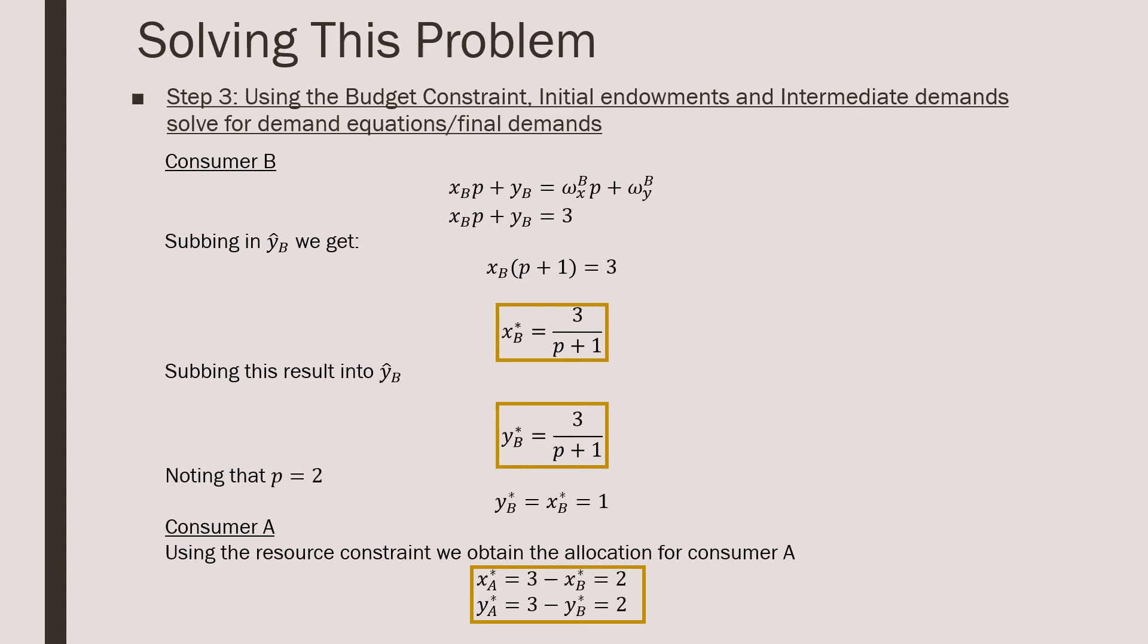So for step number three, using the budget constraint, initial endowments and intermediate demands, we're going to solve for the demand equations and final demands. So for consumer B, we're going to start there because we have the easiest problem to go and work with. We go and we sub in our endowment, which is three for good Y and nothing for good X, and we sub in XB for YB there. And we go and we find that XB star, conversely, YB star is going to be equal to three all over P plus one.